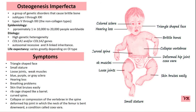Increased awareness and advancements in genetic testing have improved diagnosis, which may impact reported prevalence rates. Earlier and more accurate detection can lead to more precise prevalence estimates. The primary genes involved in Osteogenesis Imperfecta are COL1A1, which encodes one of the two alpha chains of Type 1 collagen, and COL1A2, which encodes the other alpha chain of Type 1 collagen. Mutations in COL1A2 can also cause OI.